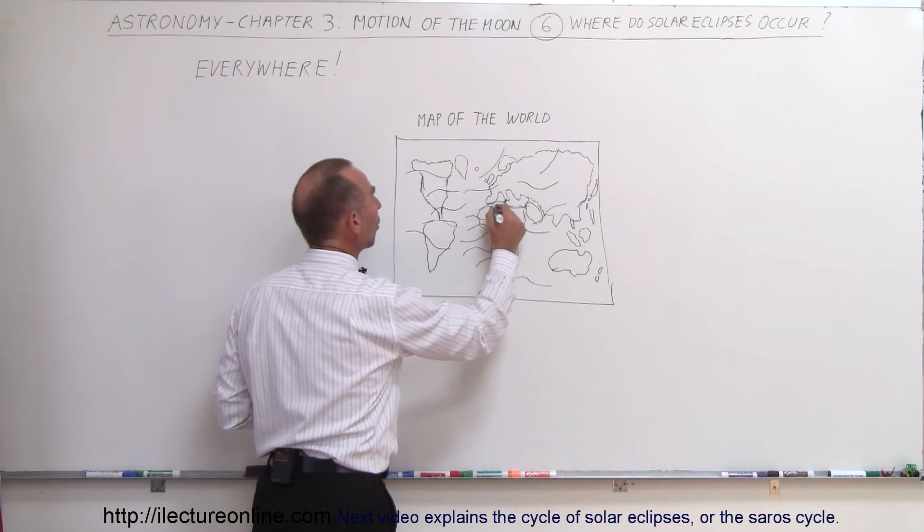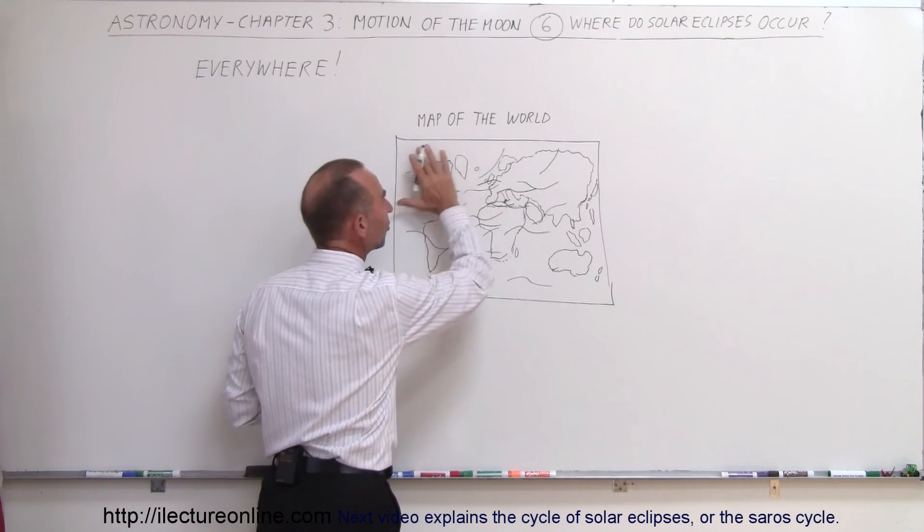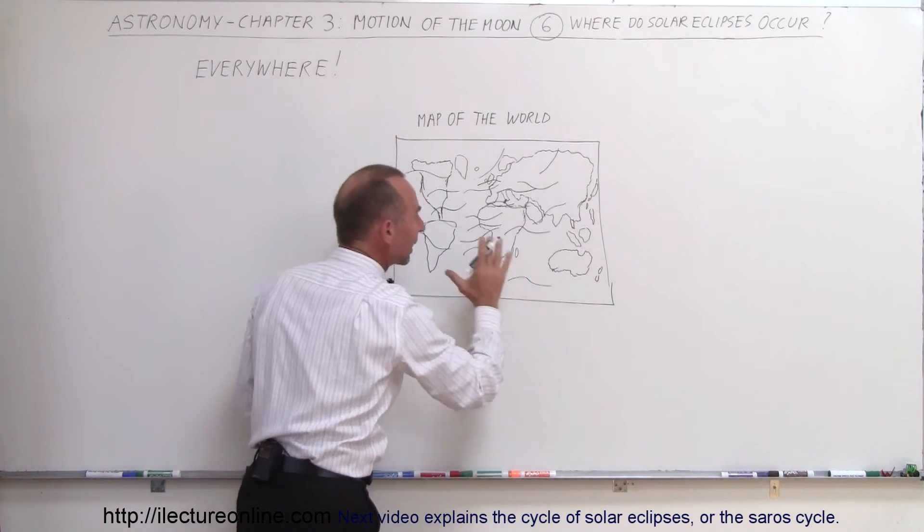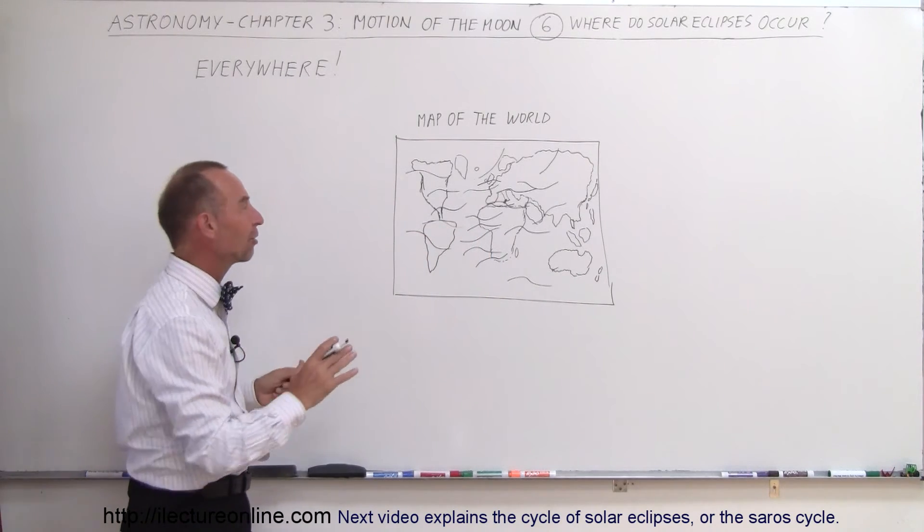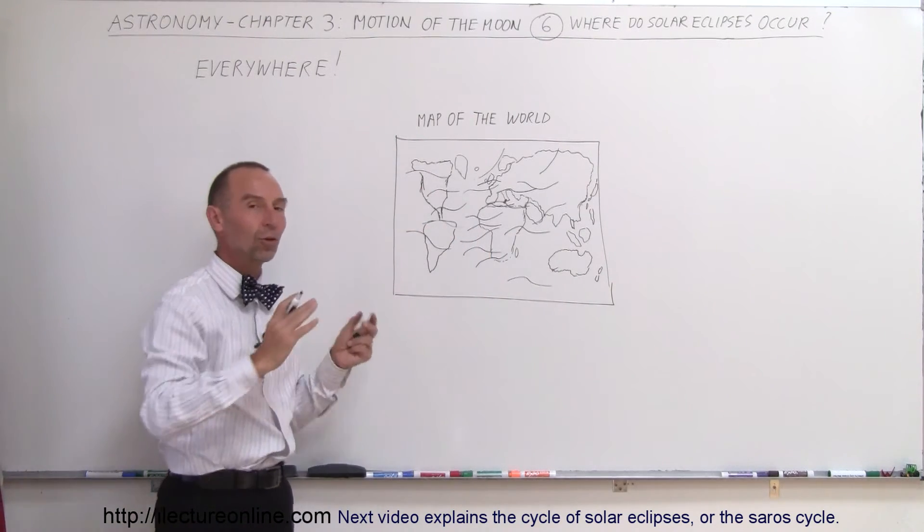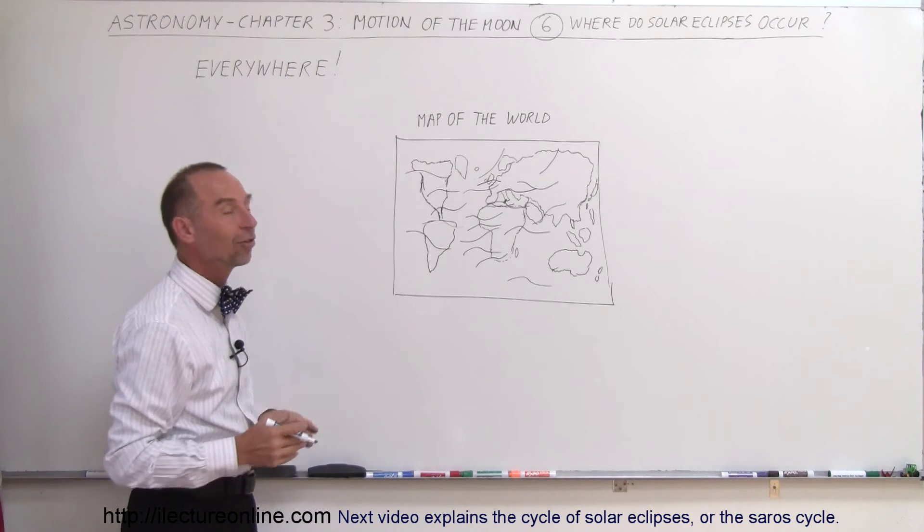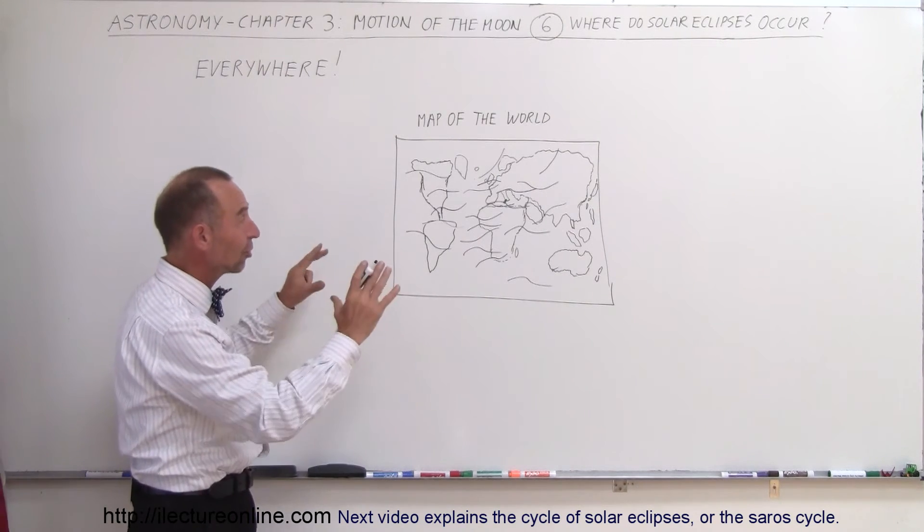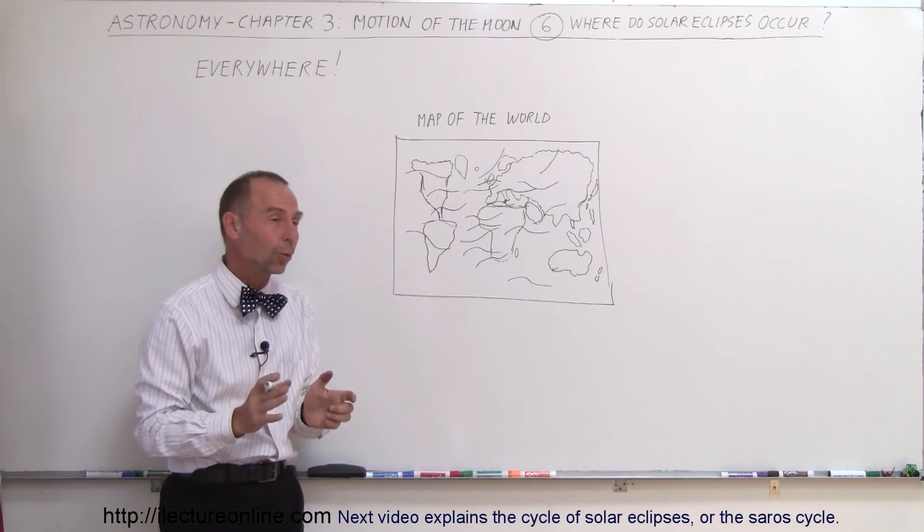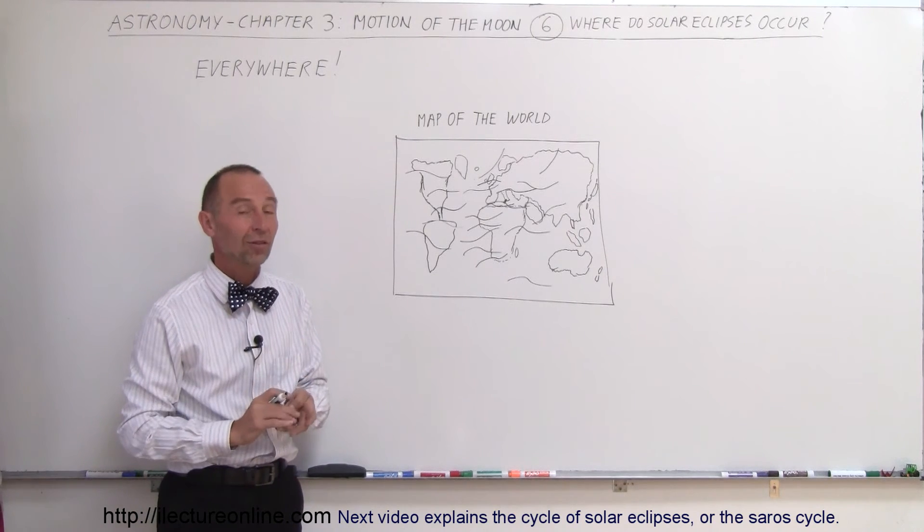And you can see almost one solid black mark of all the shadows that will have occurred on the Earth during solar eclipses over, let's say, a thousand year period. In about a thousand years, you could say that just about anyone in the world would have seen a total solar eclipse at least once.